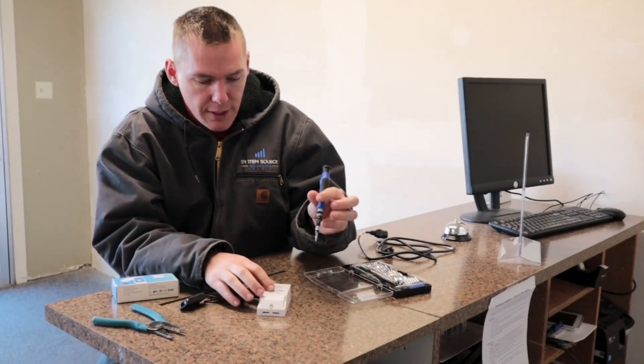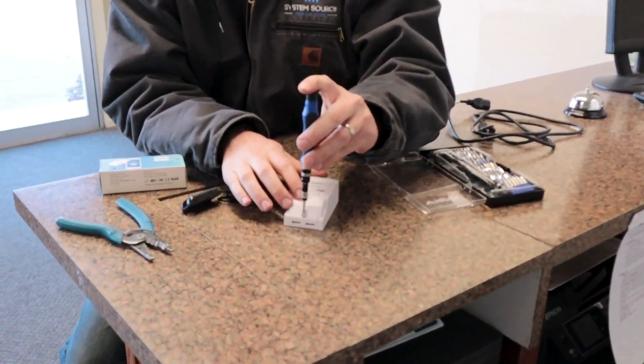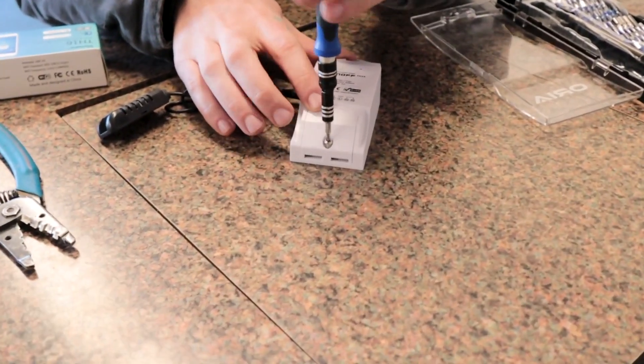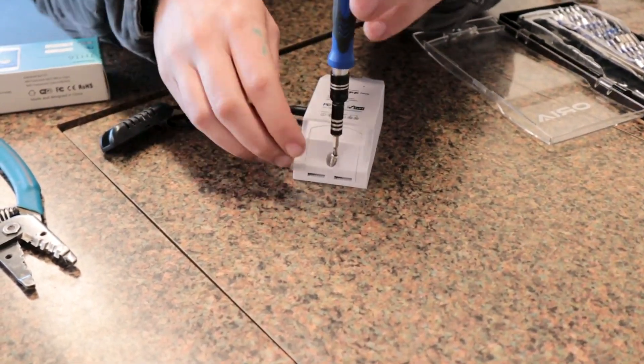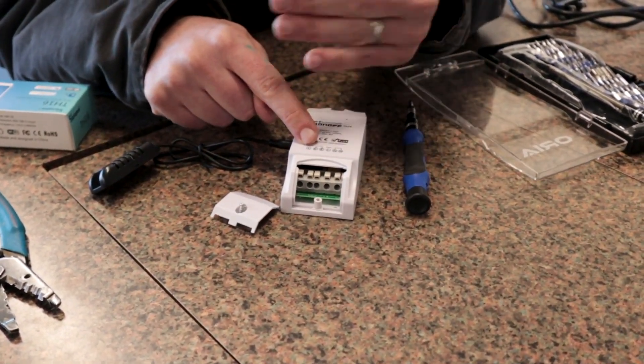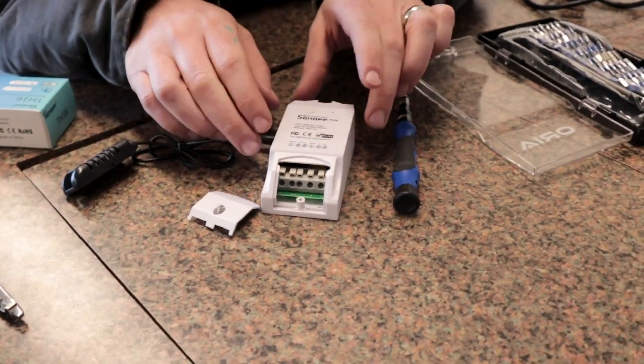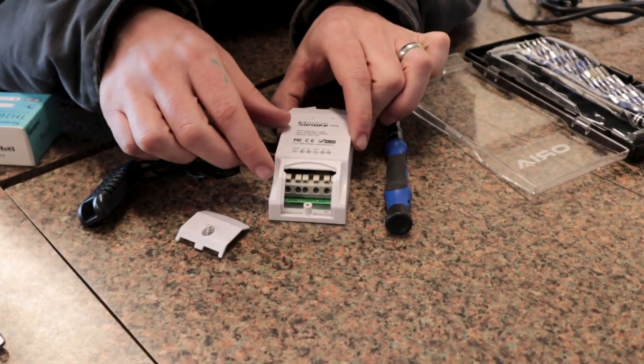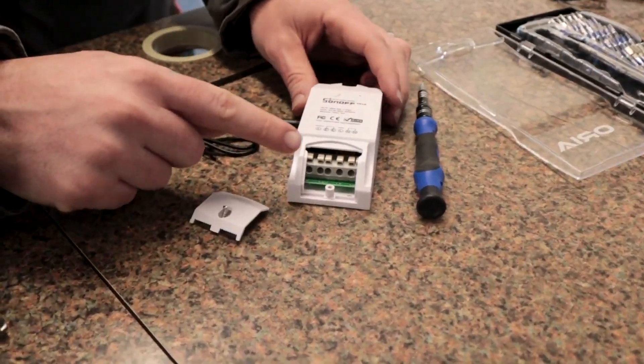And so what we want to first do is just take off this screw here right in the front. And this is the model TH16, by the way, and so it's actually a two-pole. So it'll actually switch over so you can control like a heater or a fan with it. And you see when we take that off, we actually have a couple different things.